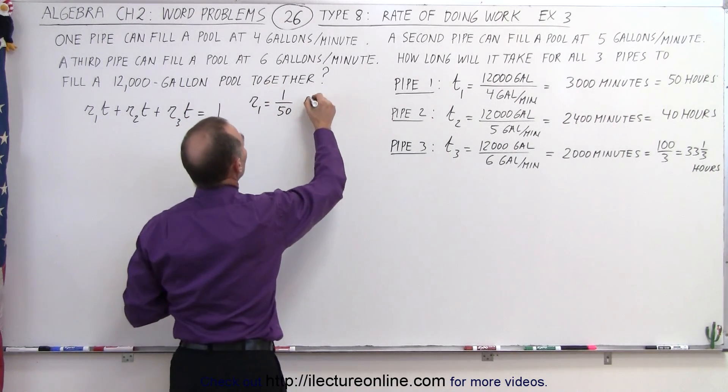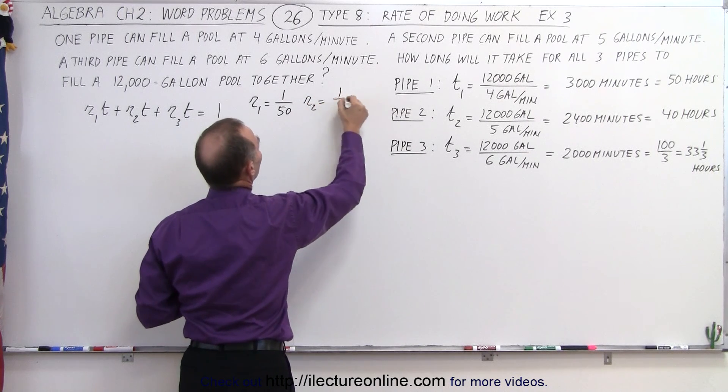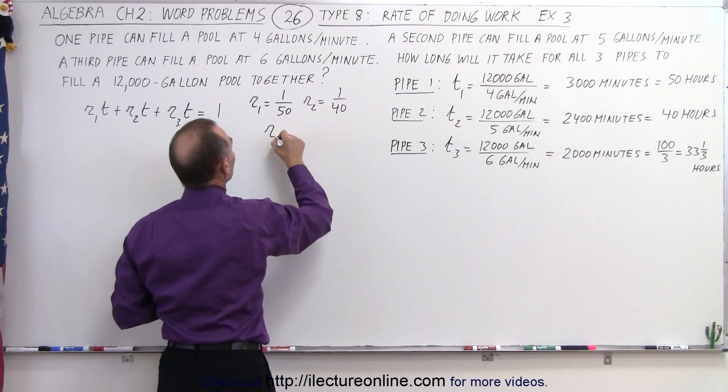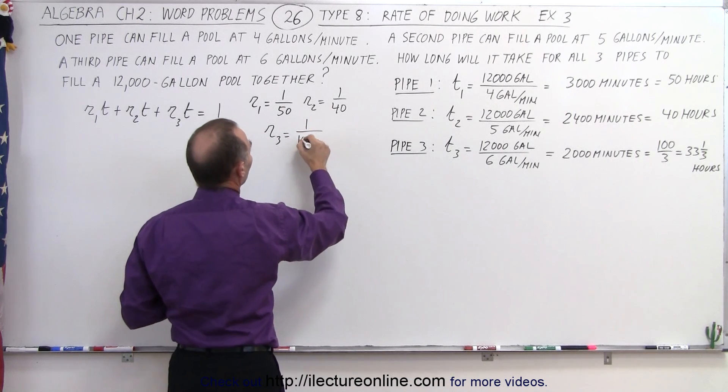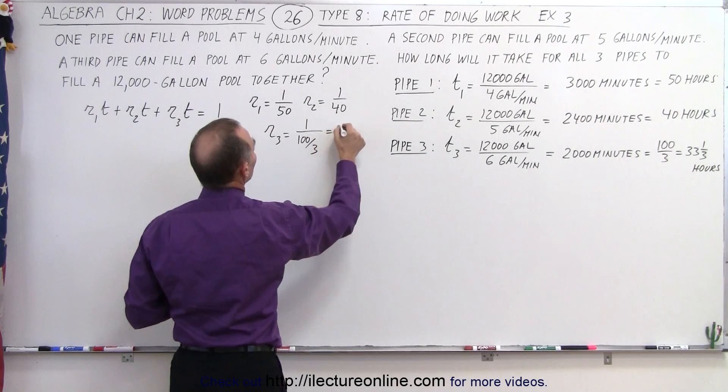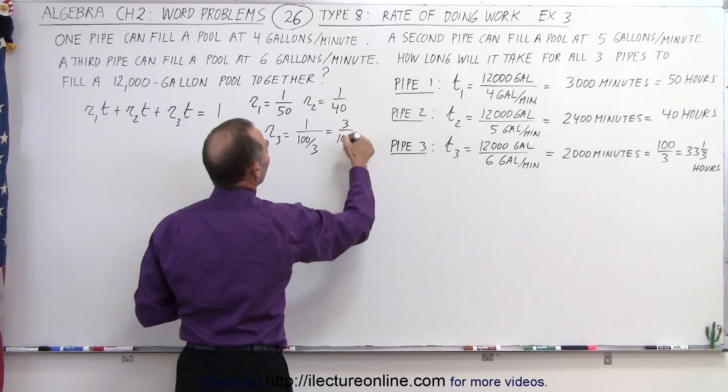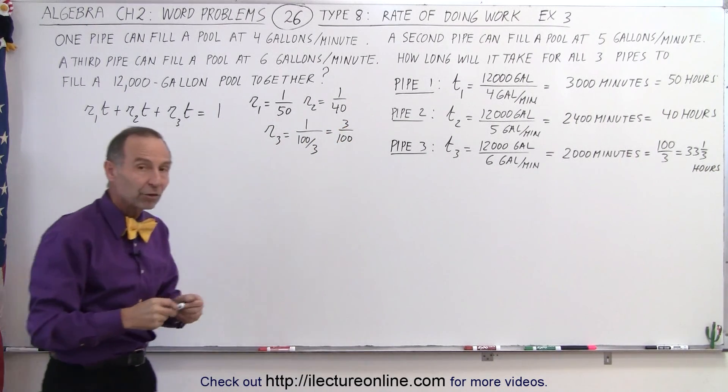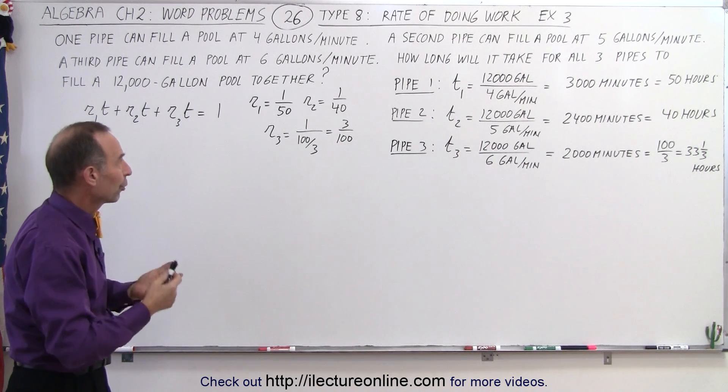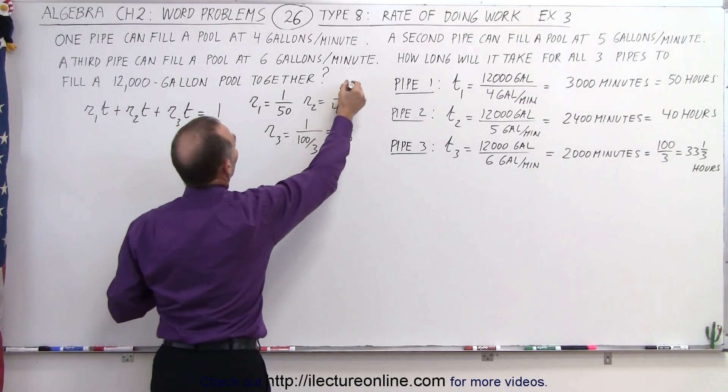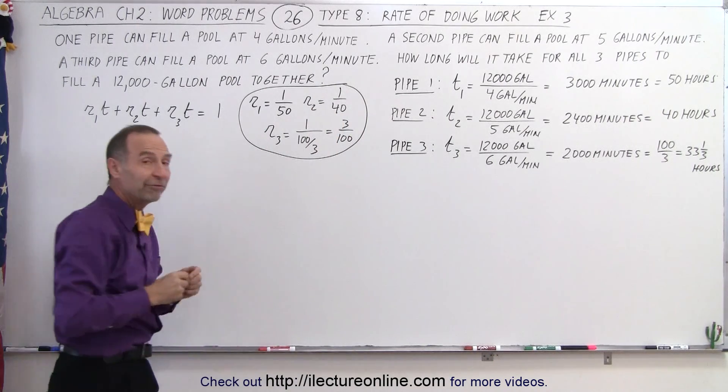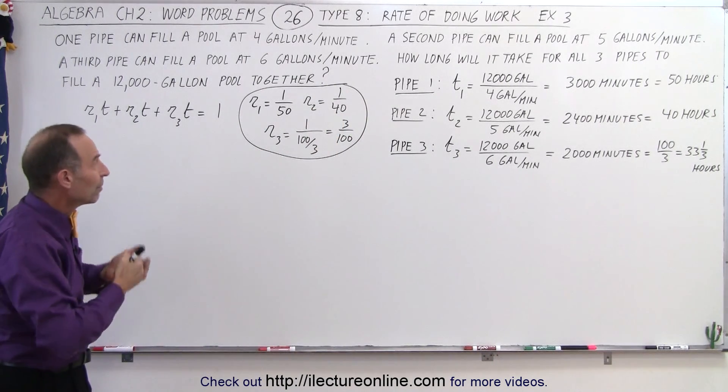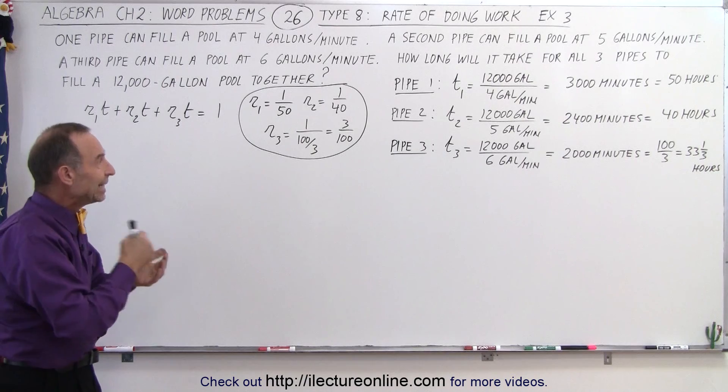Rate 2 would therefore be equal to 1/40th of a pool in an hour. And rate 3 would be equal to 1 over 100/3, which is 3/100. That would be 3/100ths of a pool per hour for the third pipe. So this gives us the three rates at which the three pipes can fill a pool. It is the amount of a pool they can fill in each hour.